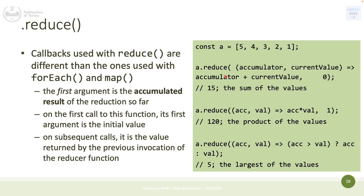Here's how it works with the initial value zero: the accumulator starts at 0, the current value is 5, so 0 + 5 = 5, stored in the accumulator. Next iteration: current value is 4, accumulator is 5, so 5 + 4 = 9. Then 9 + 3 = 12, then 12 + 2 = 14, then 14 + 1 = 15. Since the array is complete, it returns 15.